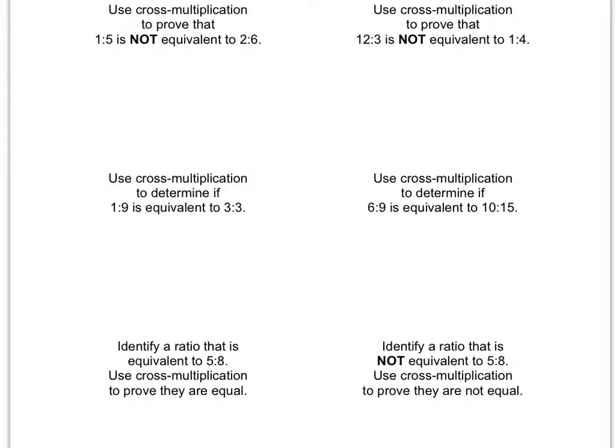This one used cross multiplication to determine if 1 ninth is equivalent to 3 thirds. So in this third set of problems here, we don't know if they are or are not equivalent, so we have to figure that out on our own. So you'll do the same process as the other two sets, the other four problems above.